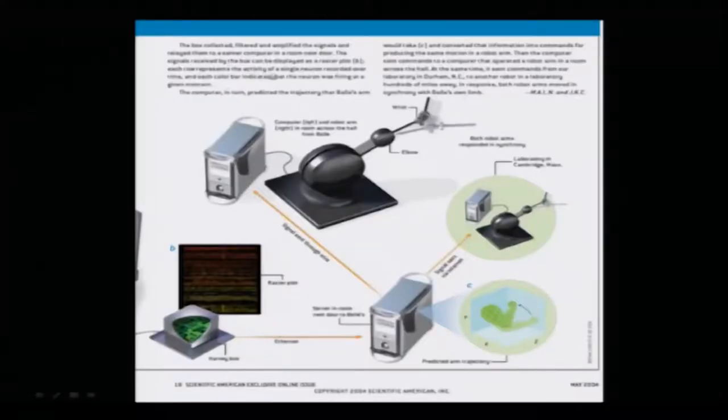Each row of the raster plot represents the activity of a single neuron recorded over time, and each color bar indicates that the neuron was firing at a given moment. Basically you are getting a spatio-temporal plot — spatio meaning from which neuron in space the signal is coming, temporal meaning with respect to time. So: this neuron is active at this time, this neuron is active at this time, and based on the plots you can trace the signal moving from neuron one to neuron two to neuron three and so on. The raster plot gives an overall spatio-temporal map of signal changes depending on where the electrodes are placed. The more electrodes, the more complex and more intense the signal.